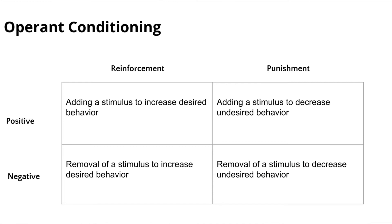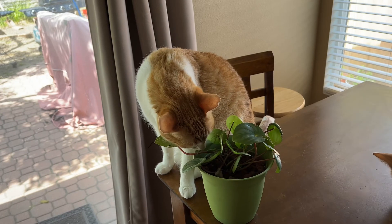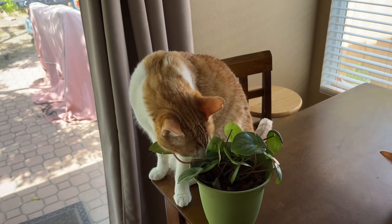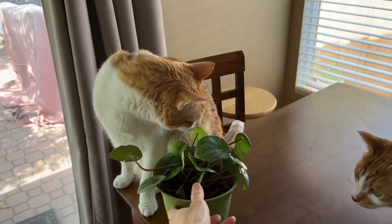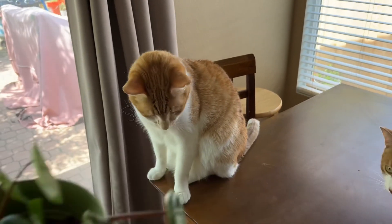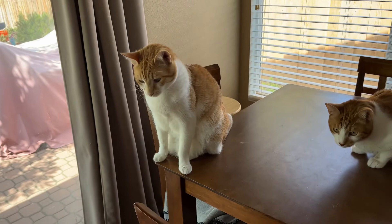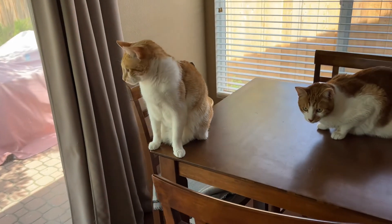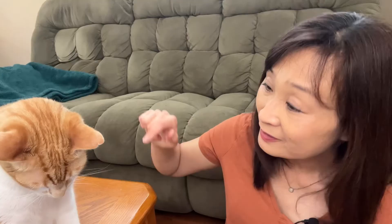Then you have negative punishment, which is the removal of something desirable as a consequence of negative behavior. Sometimes when he chews on my plant I remove the plant — something he desires — as a consequence of his negative behavior of chewing on my house plants. Don't you know those plants may not be good for you? Good thing they're all non-poisonous.